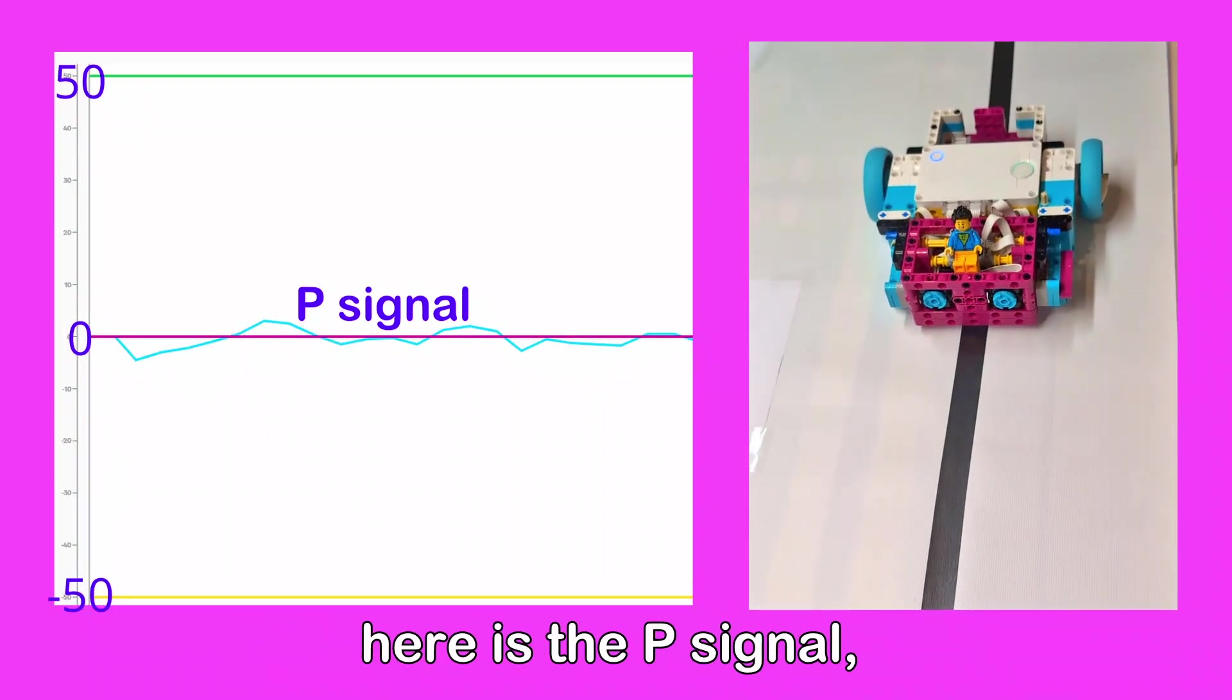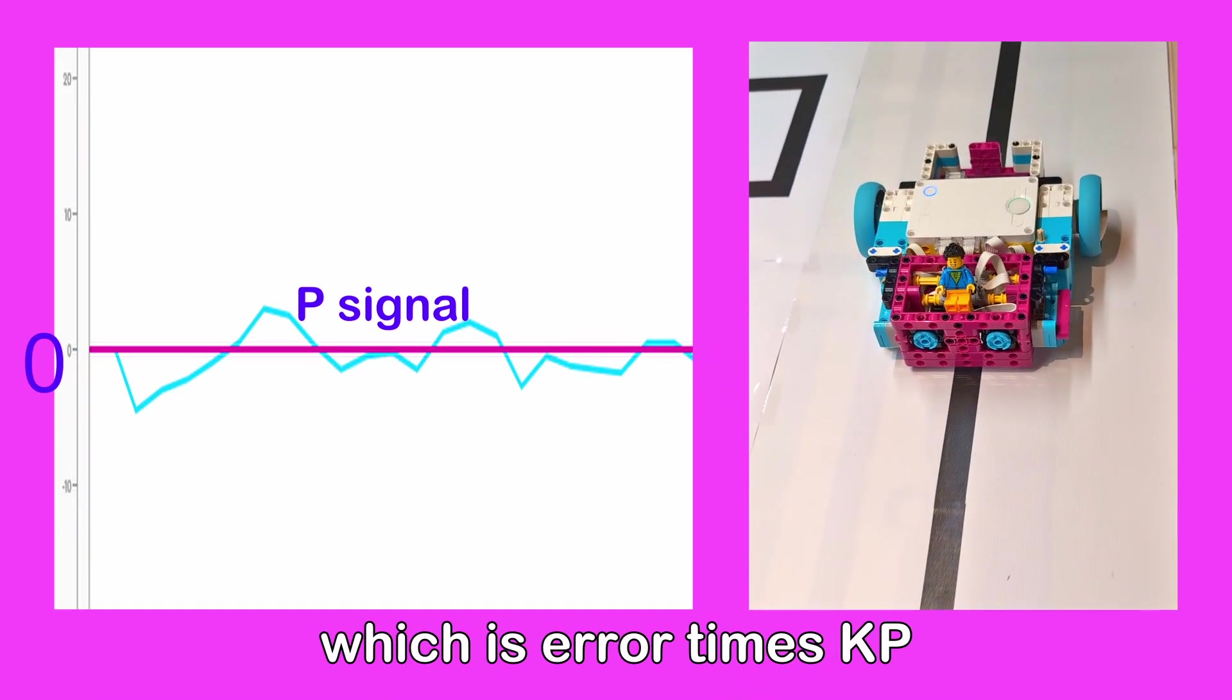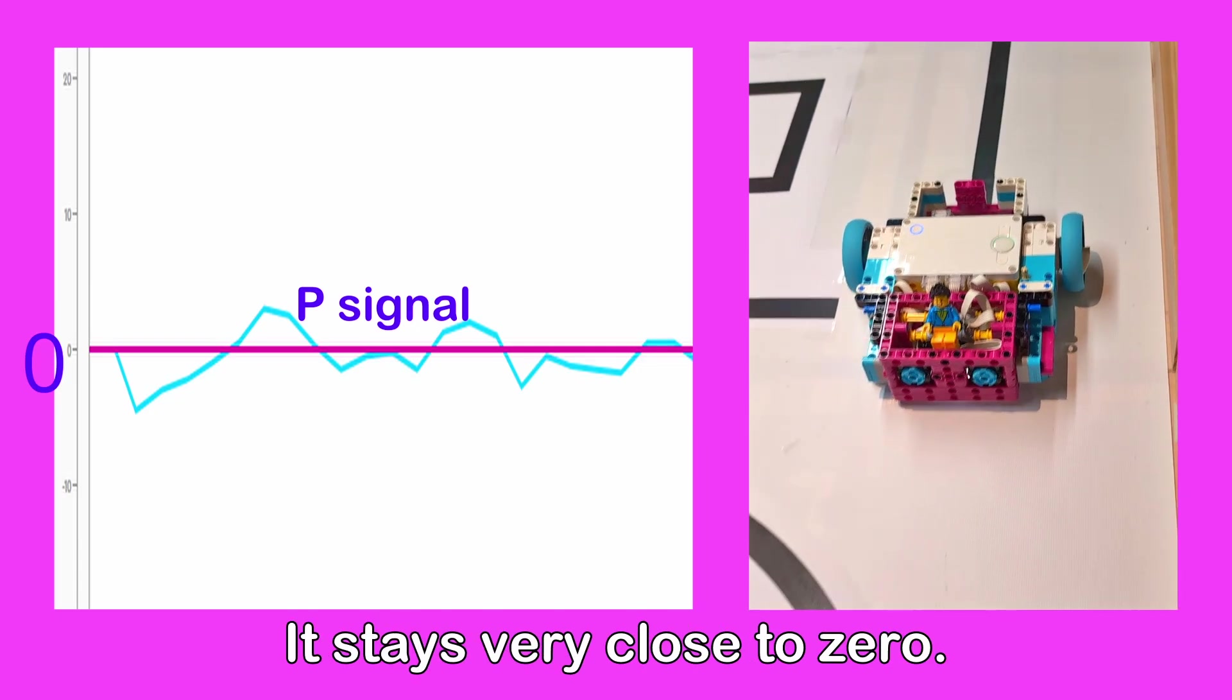Before we move on to a circle, here is the P signal, which is error times KP for a straight line. It stays very close to 0.